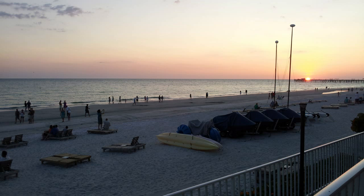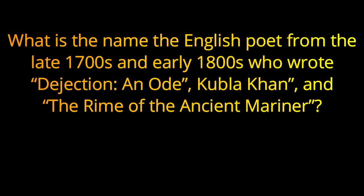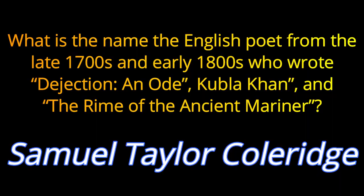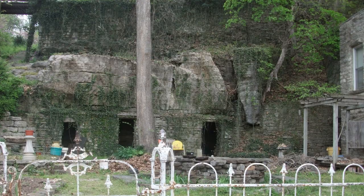Question 3. What is the name of the English poet from the late 1700s and early 1800s who wrote Dejection: An Ode, Kubla Khan, and The Rime of the Ancient Mariner? The answer is Samuel Taylor Coleridge.